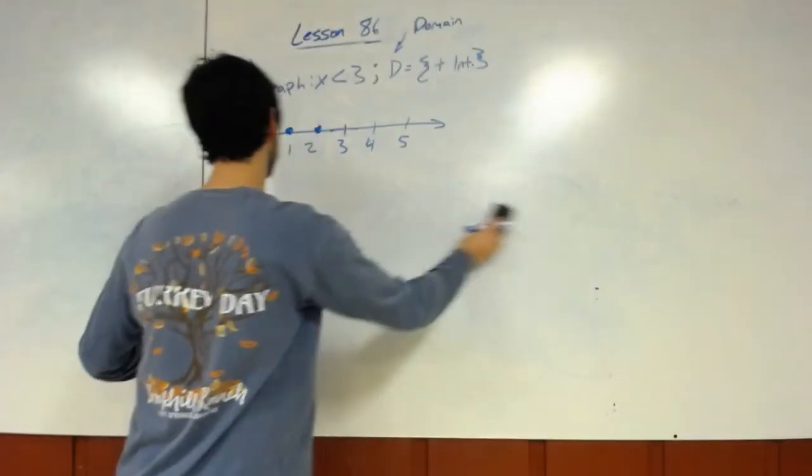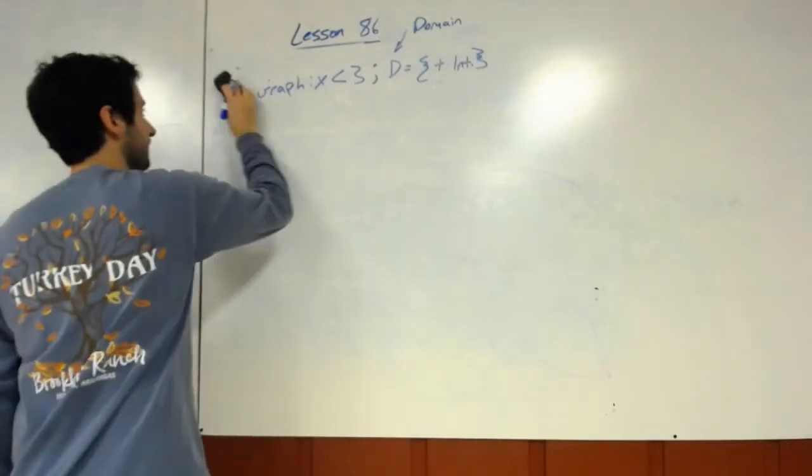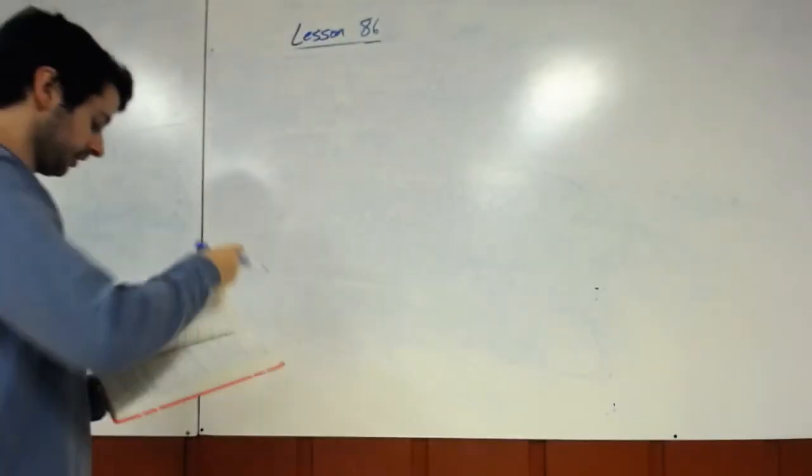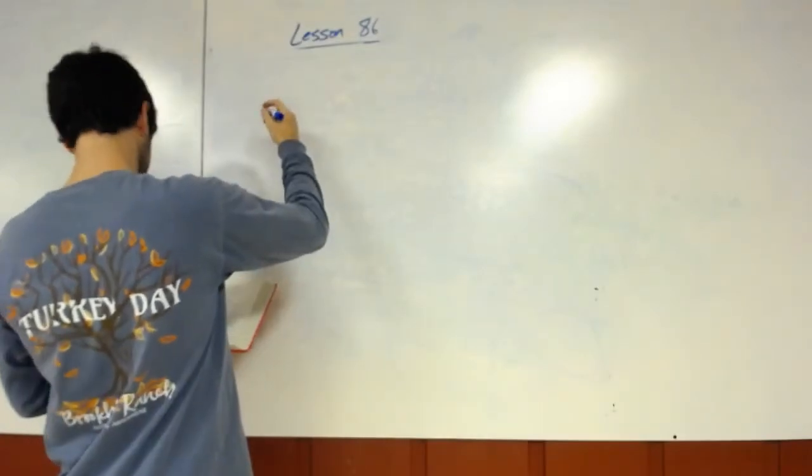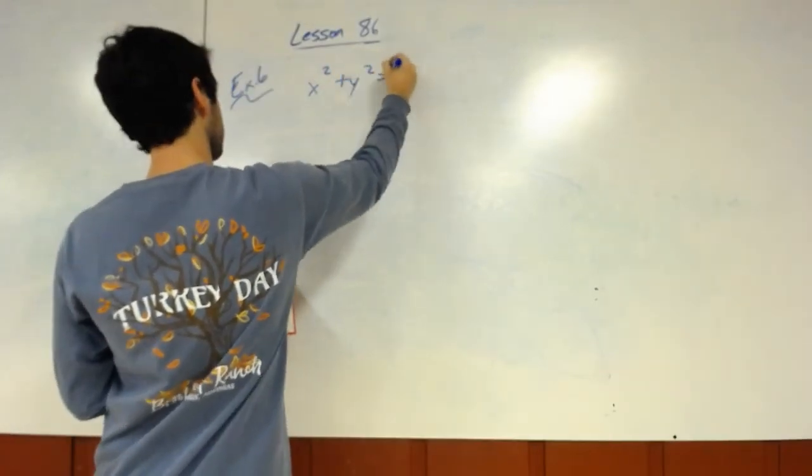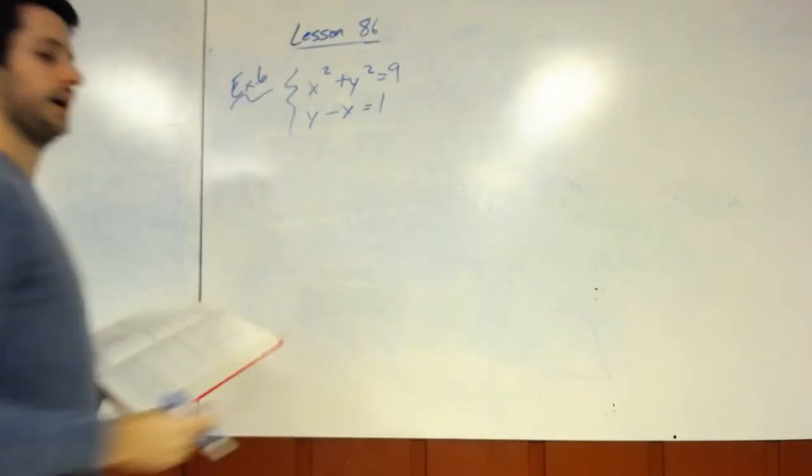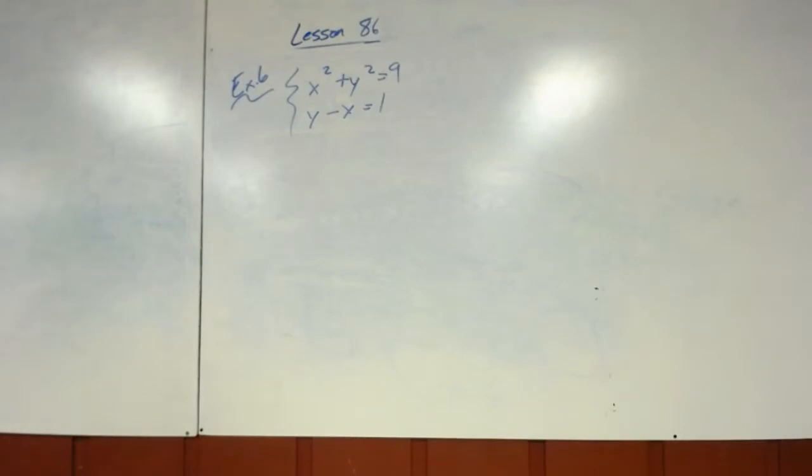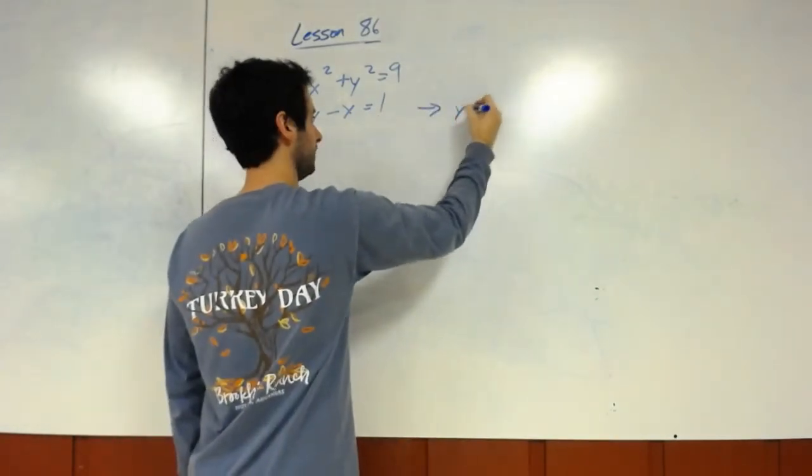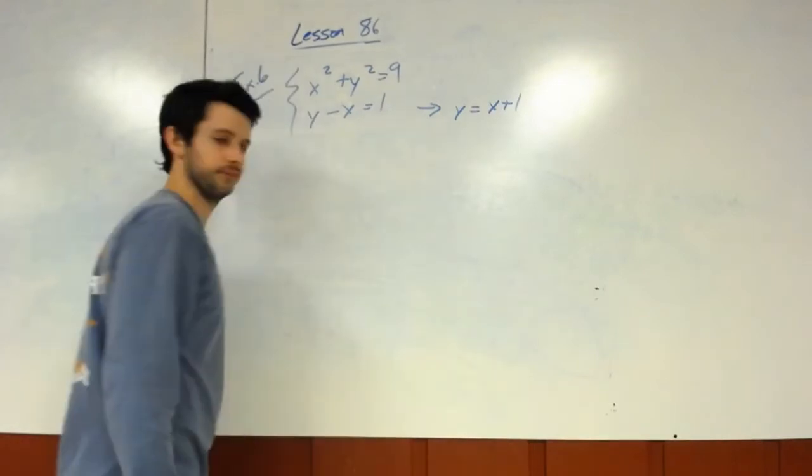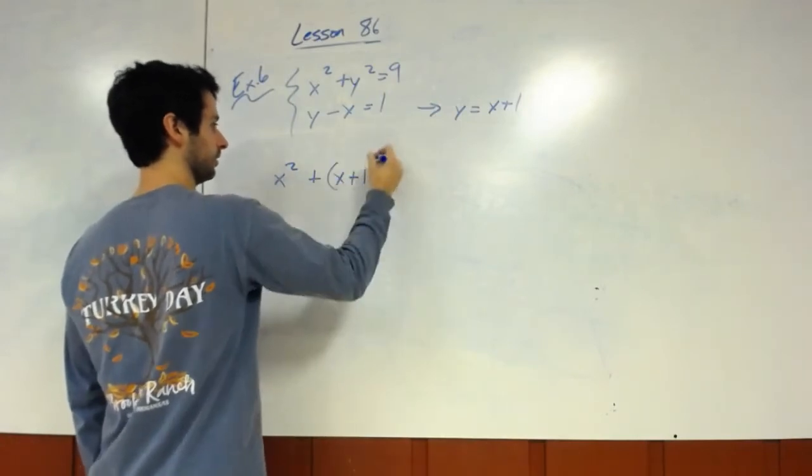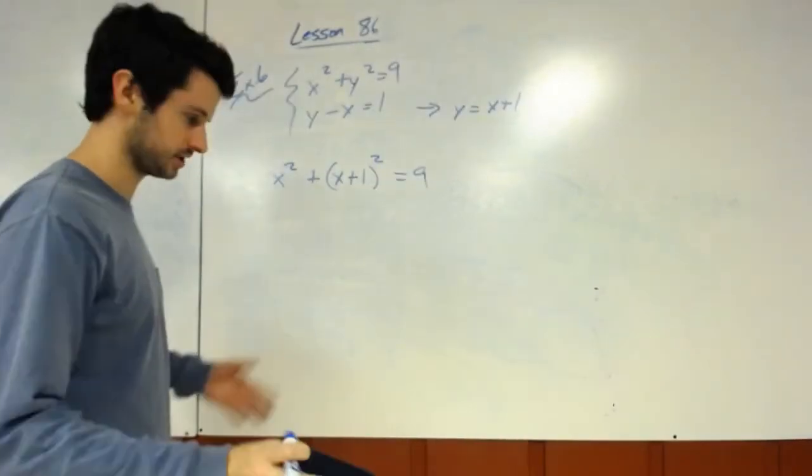It's not going to ask you to do all those integers infinite. So that's how you do the graphing. Now let's look at one more juicy type of problem. Example number 6. We did this the last lesson, a similar one to this. Now we're going to add one thing. We already know that we want to do substitution. So we add the x to the other side, so we get y equals x plus 1. We plug that in for y, so we get x squared plus x plus 1 squared equals 9.